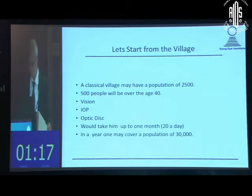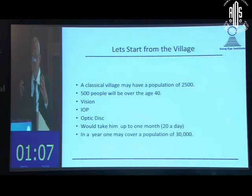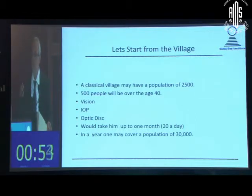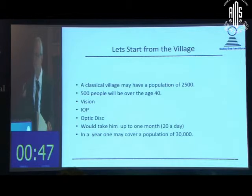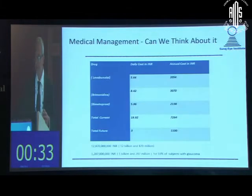If we think about diagnosing glaucoma across the country using a village model — where a village has roughly 2,500 people and about 500 (20 percent) are over age 40 — we can focus on three criteria: vision, intraocular pressure, and optic disc assessment. A small team of one or two people examining 20 people over 40 per day could cover a population of 30,000 people aged 40 and above in one year. Scaled nationally, it is a mammoth but achievable task.